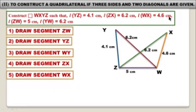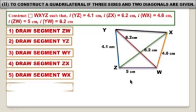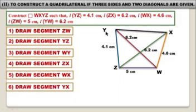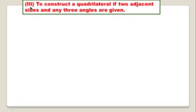WX is equal to 4.6 centimeters as given. Draw the segment, then draw the remaining segment YX. This completes Type 2. Now, Type 3: Construct a quadrilateral if two adjacent sides and any three angles are given.